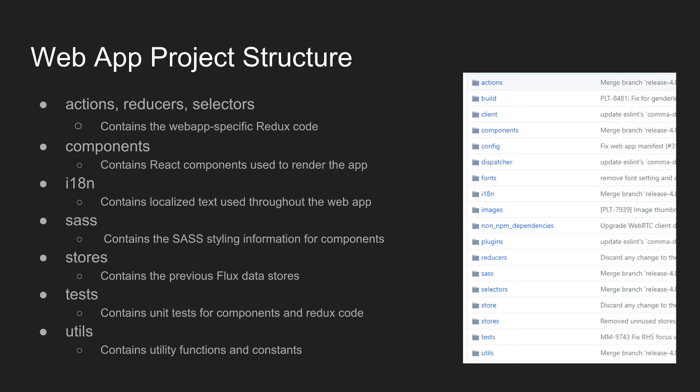The components folder contains all the components that actually render the app. If you're not familiar with React, I'll speak about that a bit later as well. There's the internationalization folder which has localized text. If you're submitting a pull request, we prefer if you just make changes to the English strings — all the other translated ones are done through our translation server, which keeps the process easier.